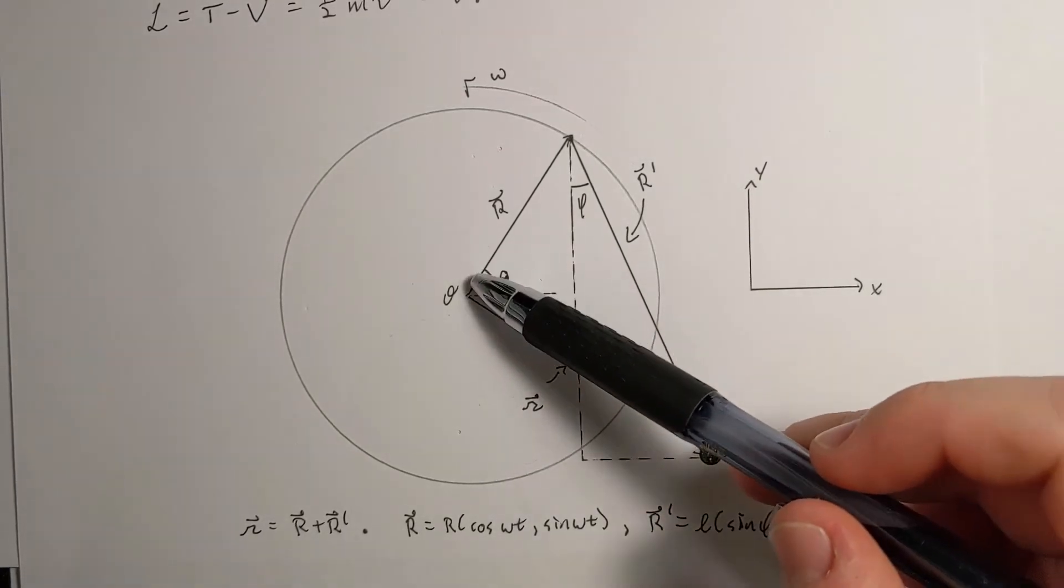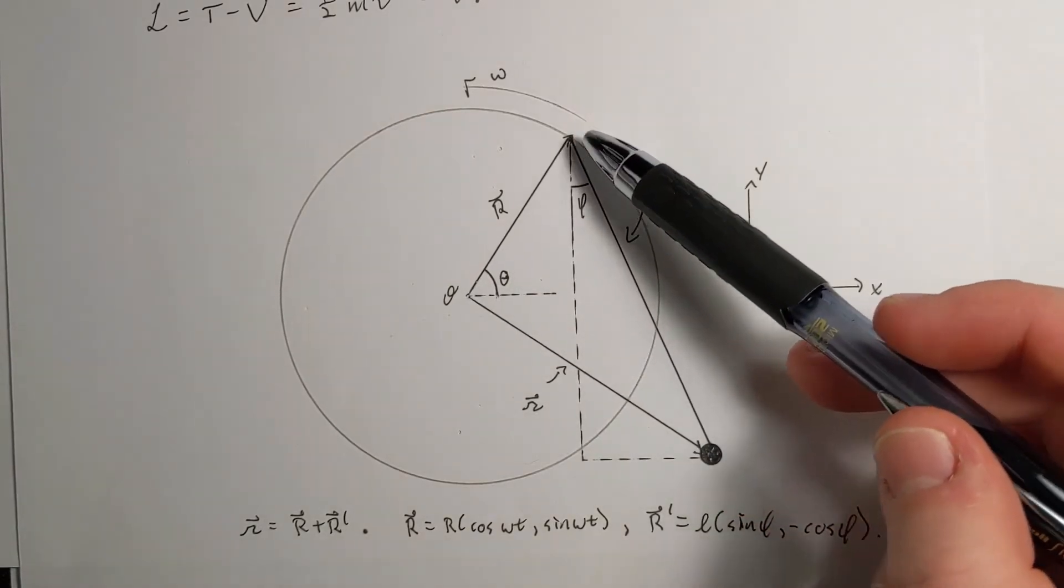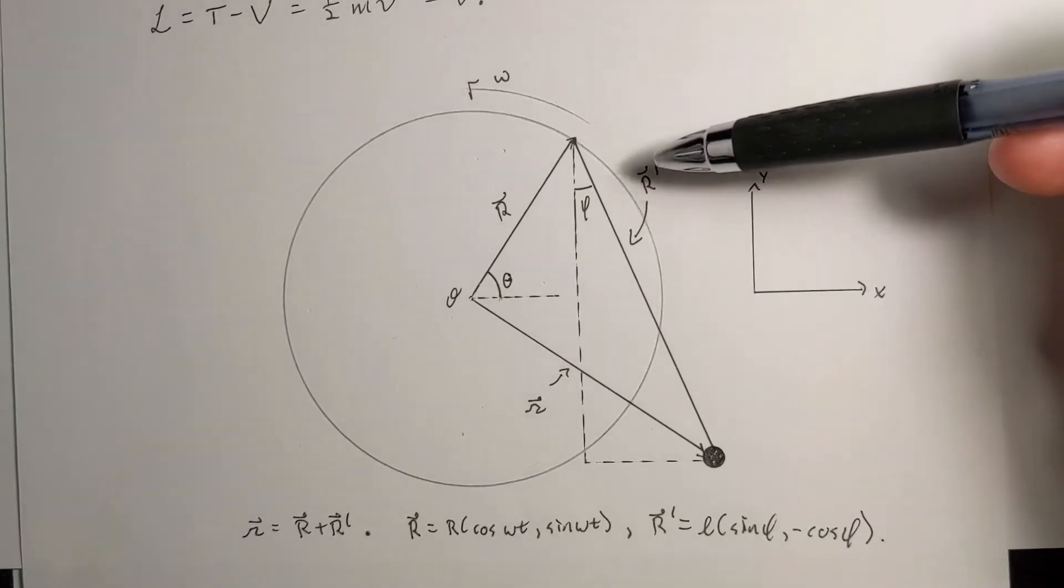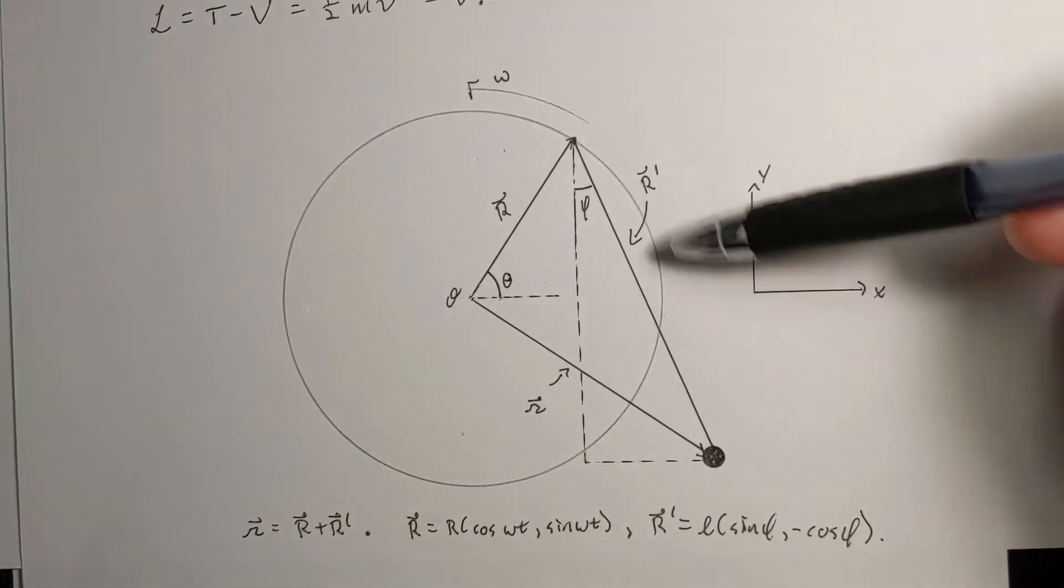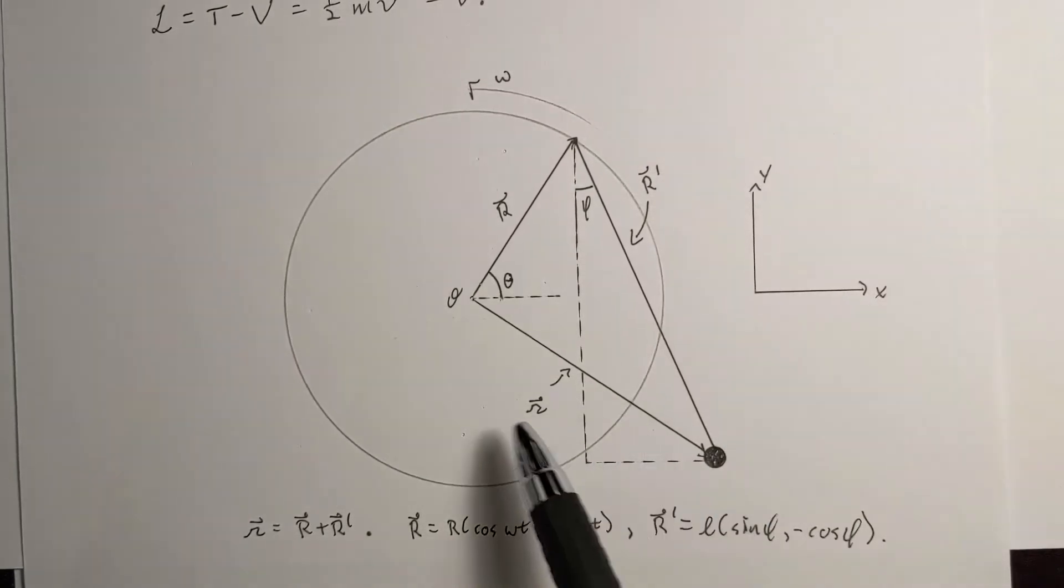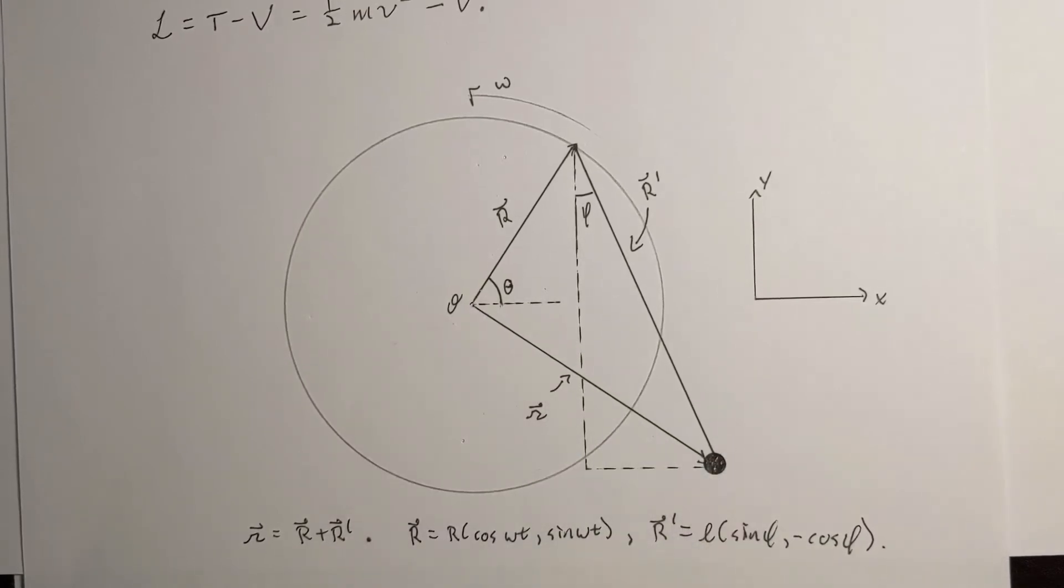So I'm going to define a vector from the origin to the attachment point, I'm going to call that R, and then I'm going to take the vector from the attachment point to the mass, I'll let that be R prime. And I'm going to take the resultant, or the vector addition, as being curly R, which is going to be from the origin to the mass. So simply put, curly R is equal to R plus R prime.